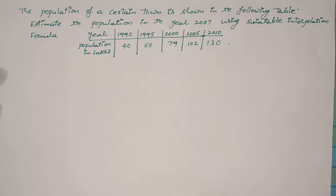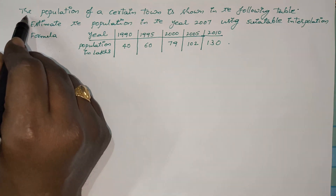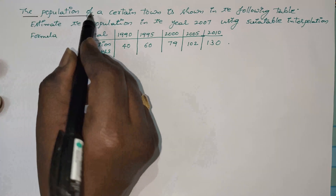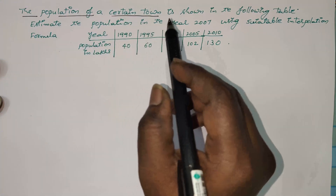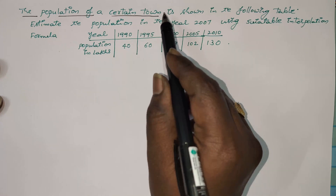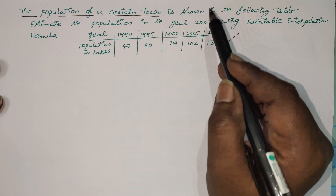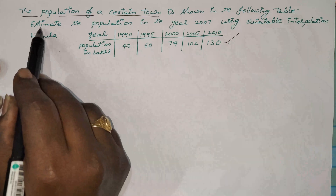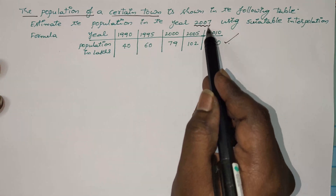Hi everyone, welcome back to our channel. In this video I would like to explain another example on interpolation. This is the statement of the given problem: the population of a particular town is given in the following table. Estimate the population in the year 2007.